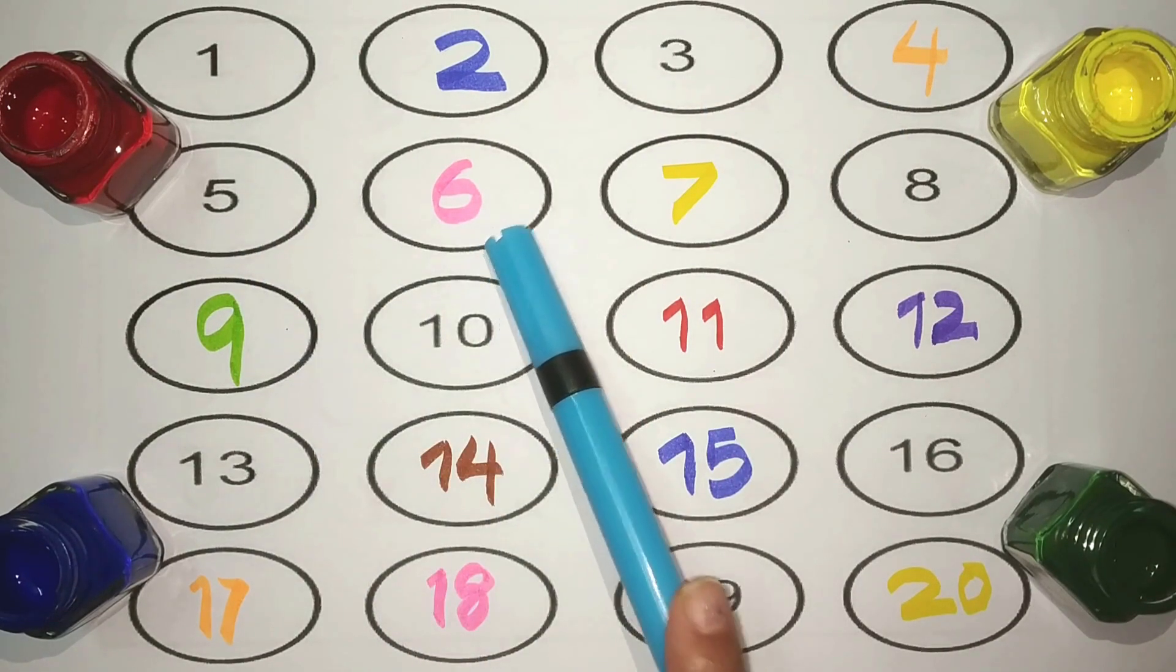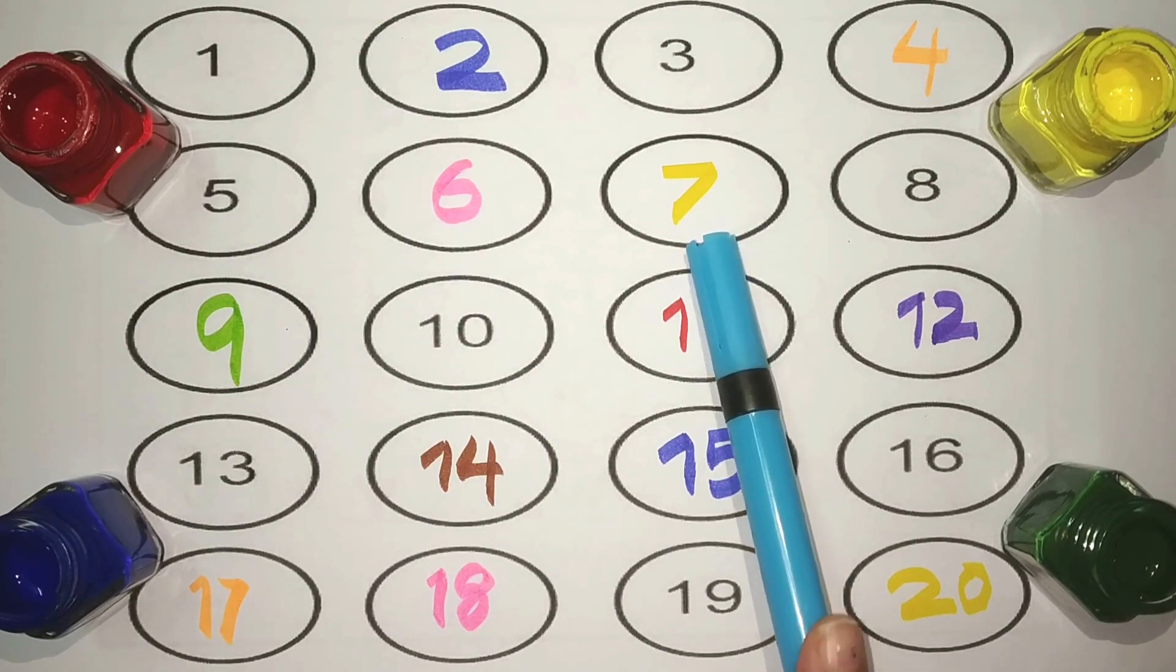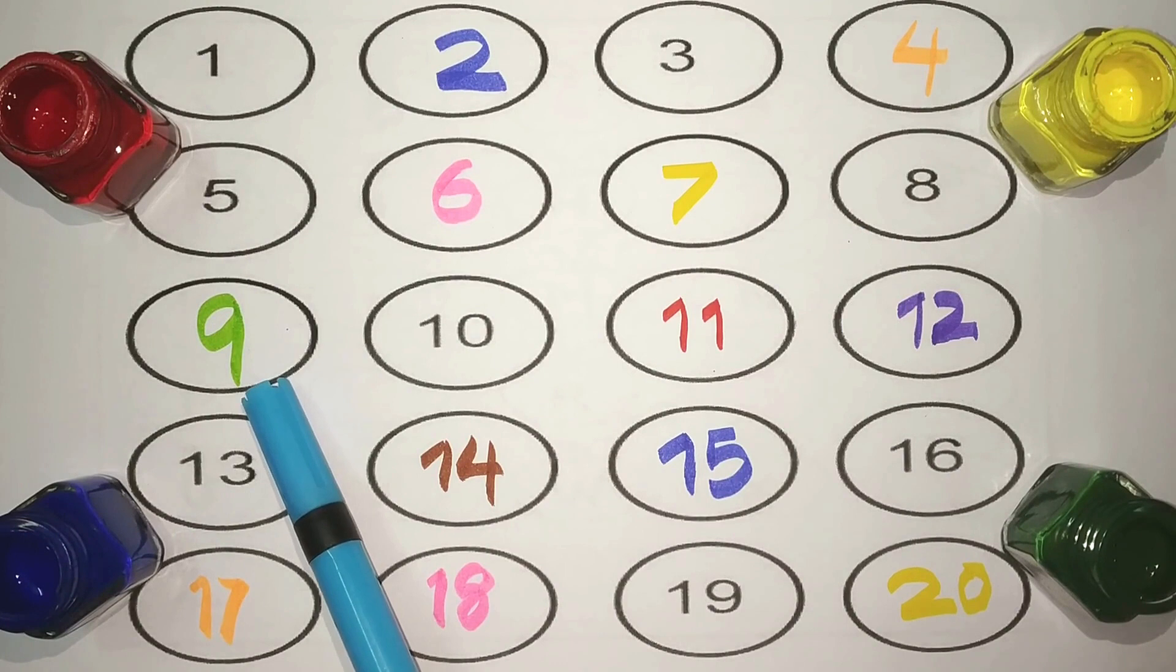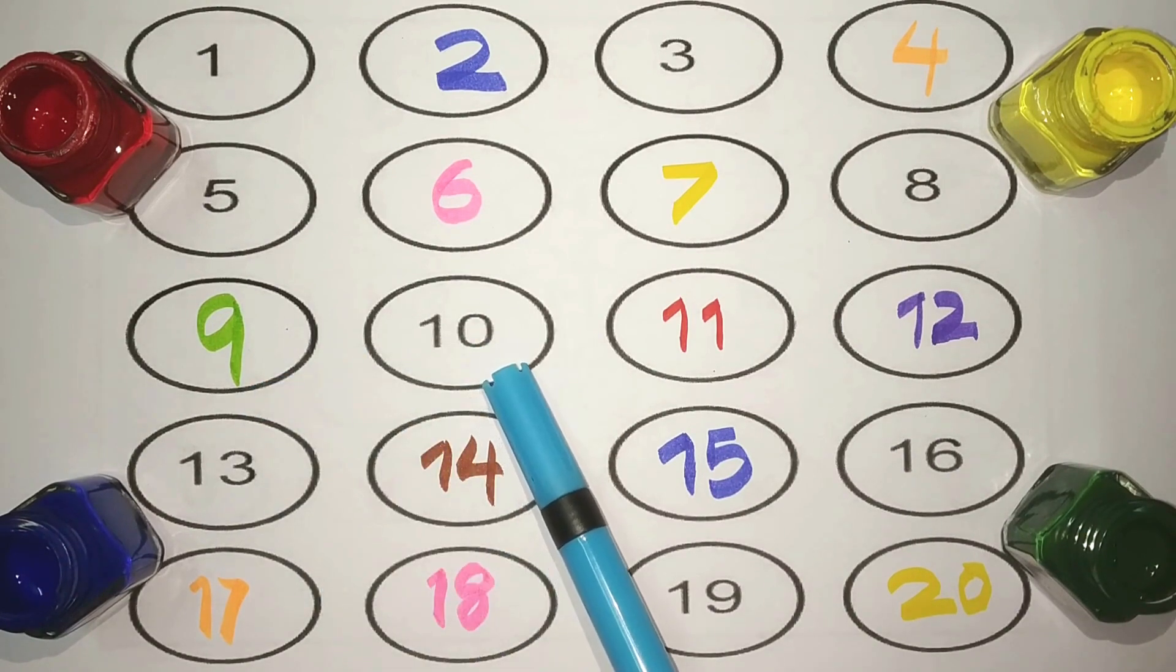Six, pink. Seven, yellow. Eight, black. Nine, green. One, zero, ten. Black.